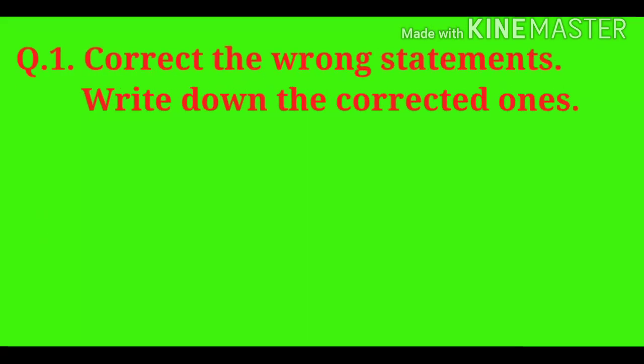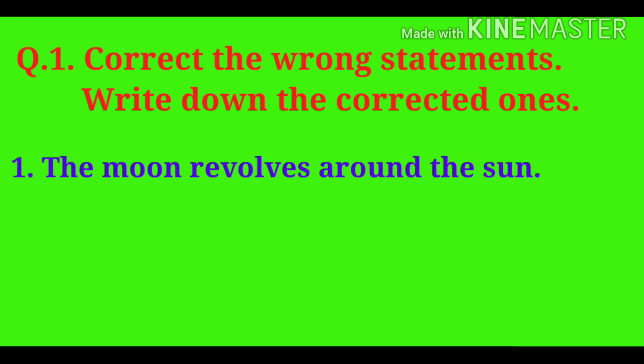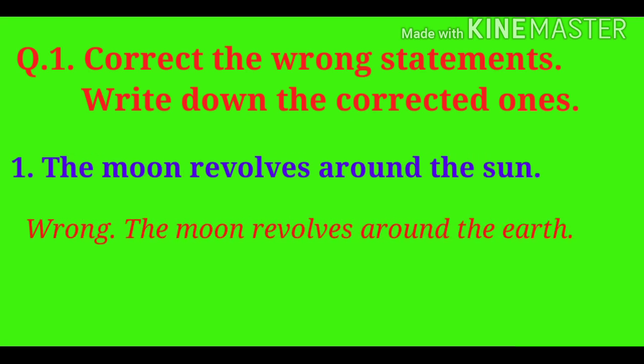Question No. 1: Correct the wrong statements and write down the corrected ones. Statement: The moon revolves around the sun. Wrong. Correction: The moon revolves around the earth.